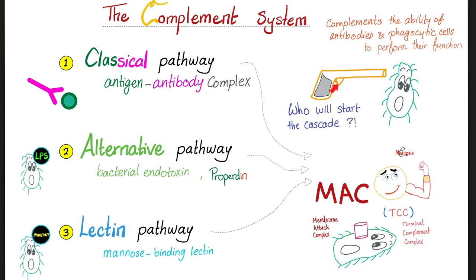How do I activate my complement system? We need a trigger. Once you pull the trigger, it goes downhill and we will kill the bacteria. Three pathways can pull the trigger: the classical pathway — where the antigen-antibody complex pulls the trigger; the alternative pathway — where bacterial endotoxin and properdin pull the trigger; or the lectin pathway — where mannose-binding lectin pulls the trigger. Regardless of which pathway, eventually we make the terminal complement complex, also known as the membrane attack complex.